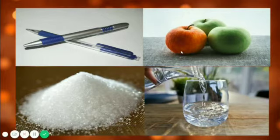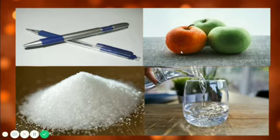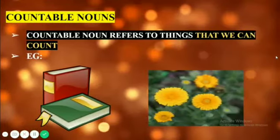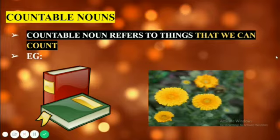We know that nouns are names of person, place, animal and things. And depending on whether a noun can be counted or not, it is classified either as a countable or an uncountable noun. So let us see about countable nouns. Countable nouns refer to things that we can count. Countable nouns are the names of objects, people or things that we can count. So how to identify countable nouns? When you get an answer for the question 'how many,' then the things referred to are countable nouns.